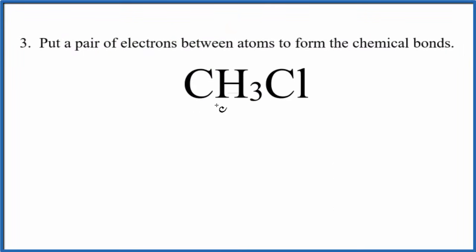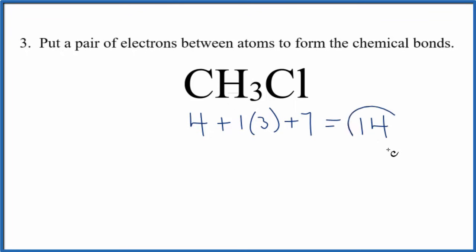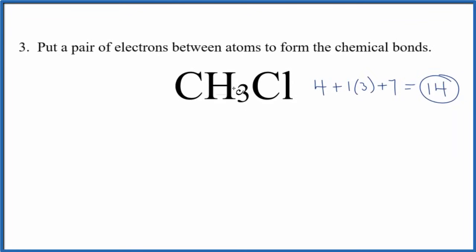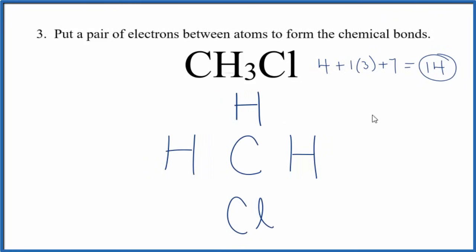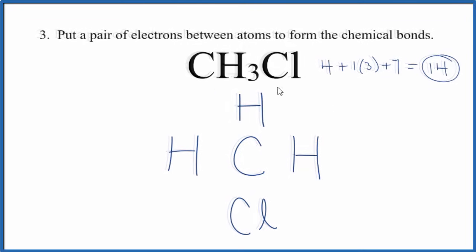For the next few steps, I'll draw the Lewis structure for CH3Cl. I count the valence electrons — carbon is less electronegative than chlorine, and hydrogen always goes on the outside, so I'll put carbon in the center with the hydrogens around it and chlorine here. We have 14 total valence electrons. We'll spread them out by putting pairs of electrons between the atoms to form the chemical bonds. We've used 2, 4, 6, 8 valence electrons.